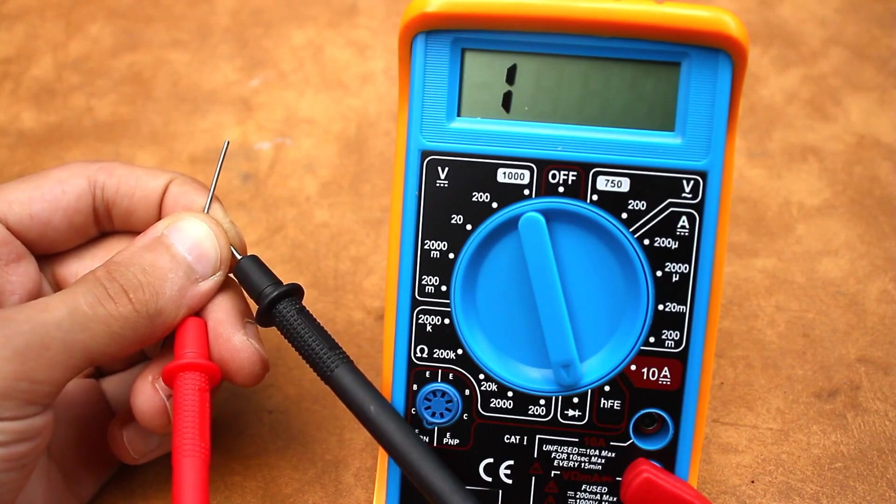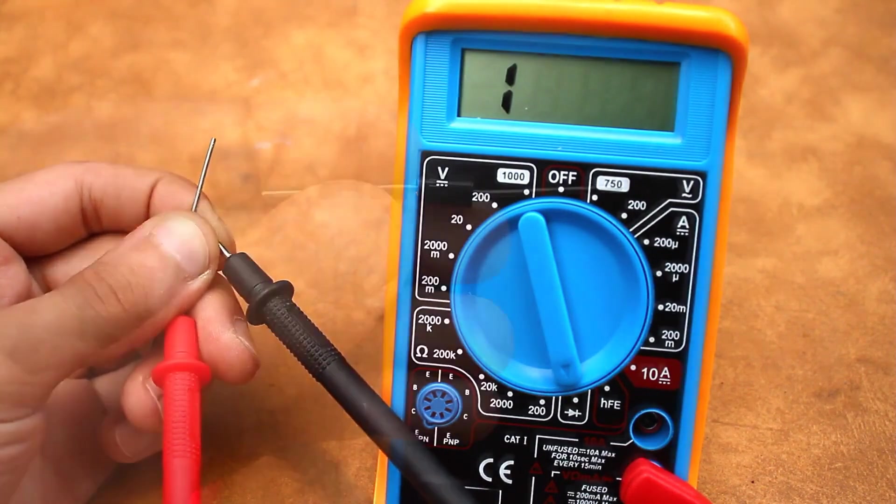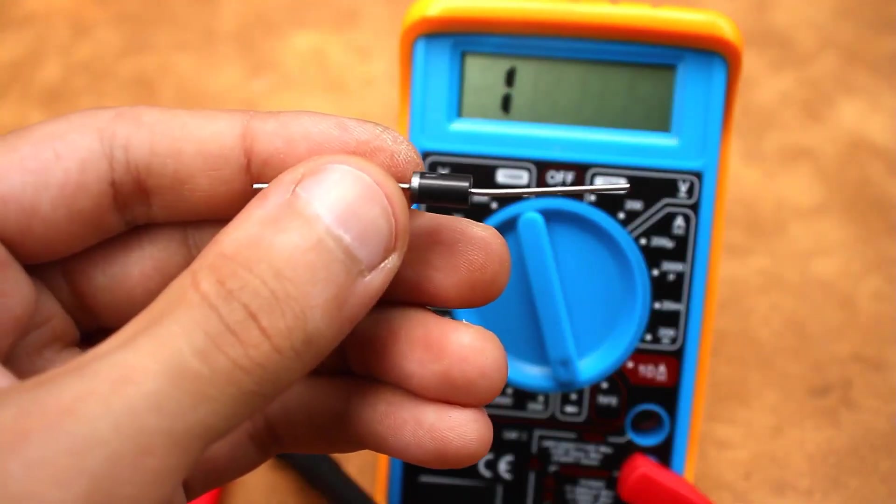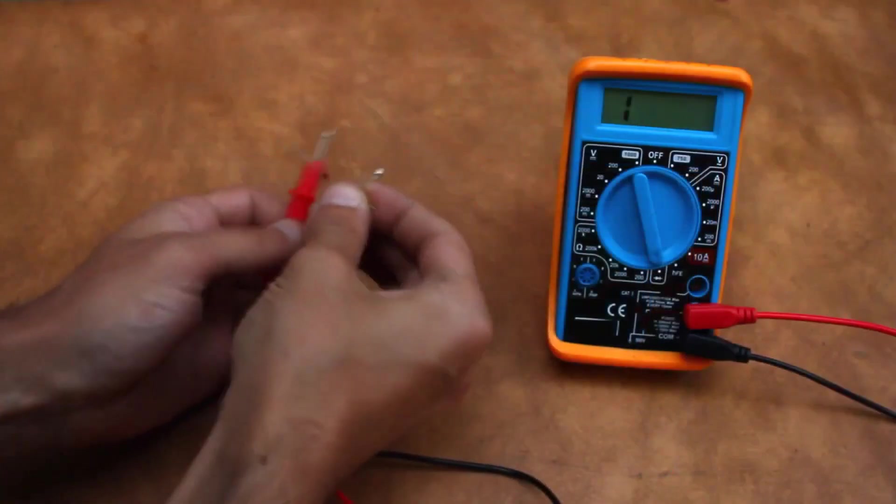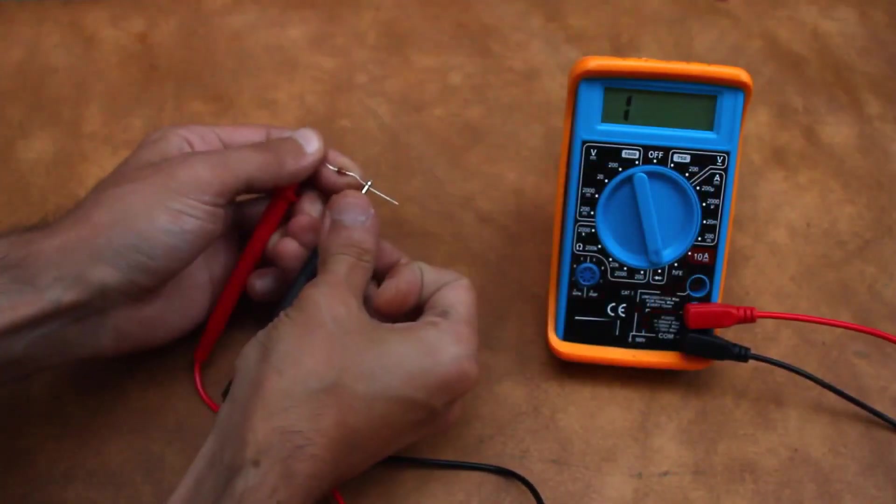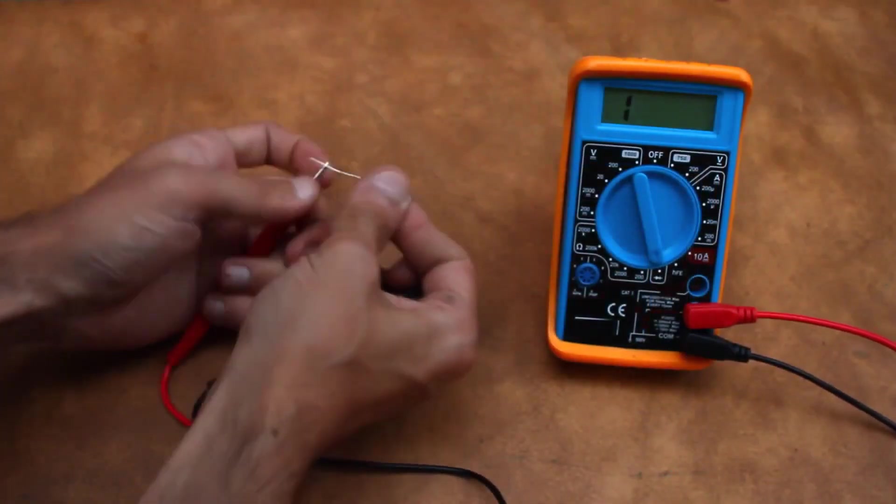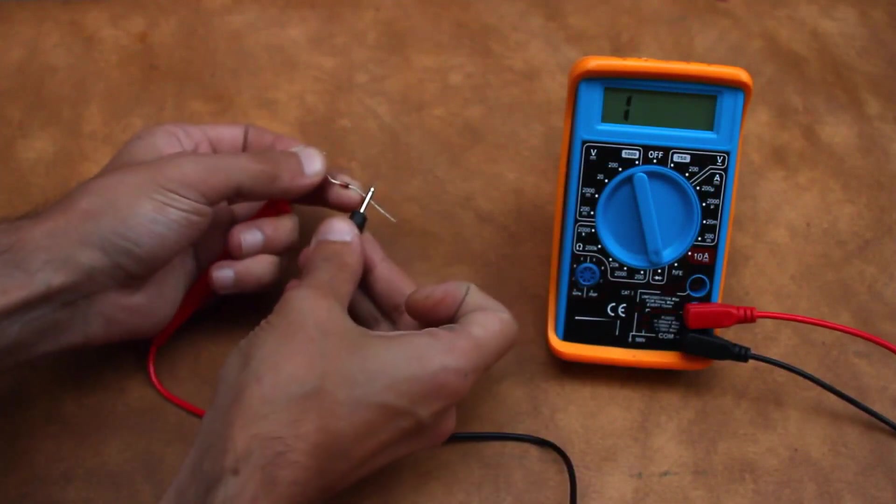If there is still nothing on the display, it means the diode is open. Throw it in the trash. If in both directions the voltage drop across the diode is either zero or very small, the diode is also faulty.